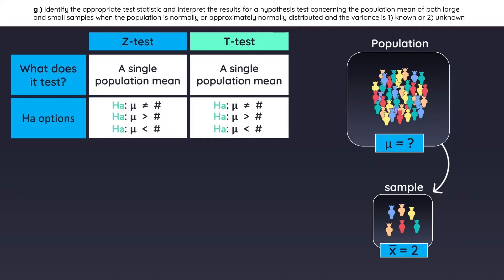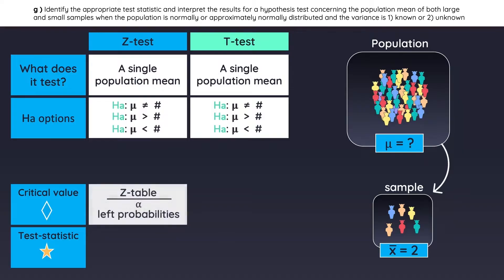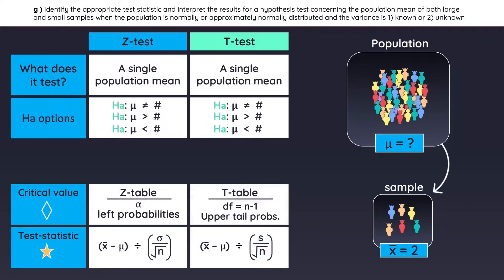Once you have stated the hypothesis, you need a critical value and a test statistic. You're either going to use the z-table or the t-table to find the critical values. These are the formulas for the test statistics. The only difference is that the z-test uses the population standard deviation, and the t-test uses the sample standard deviation. Be careful that you don't accidentally input a variance into this formula instead of a standard deviation.